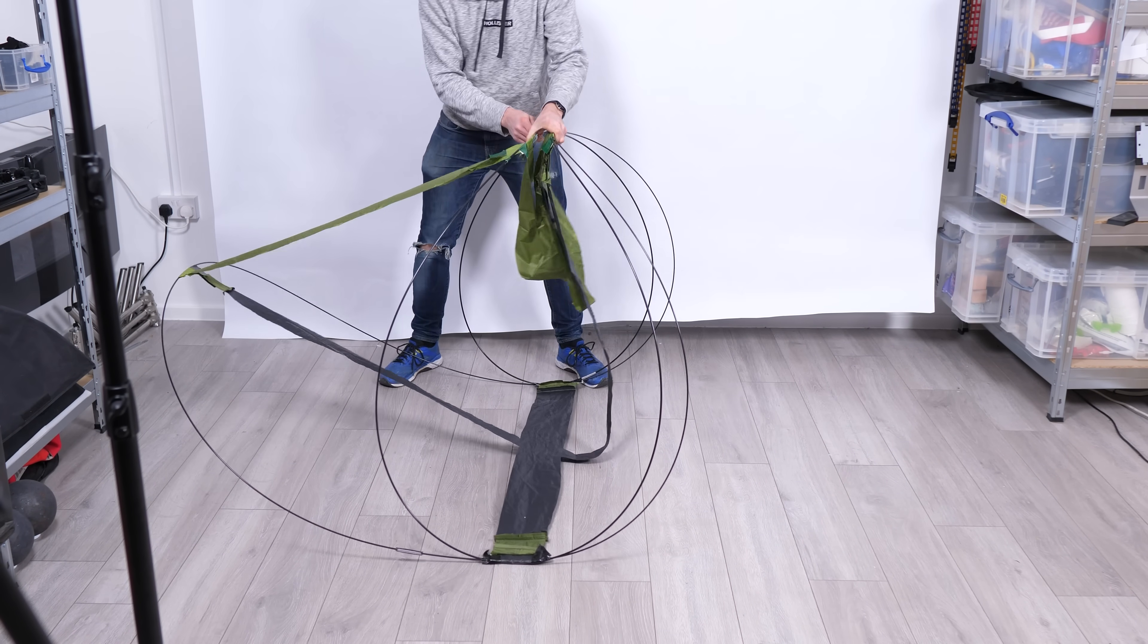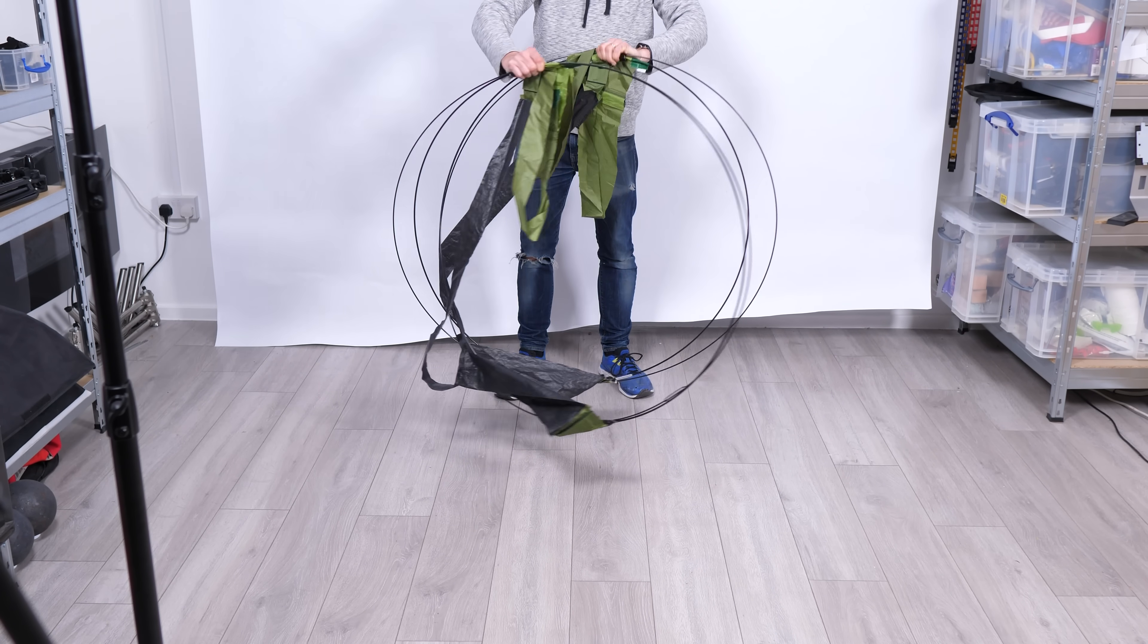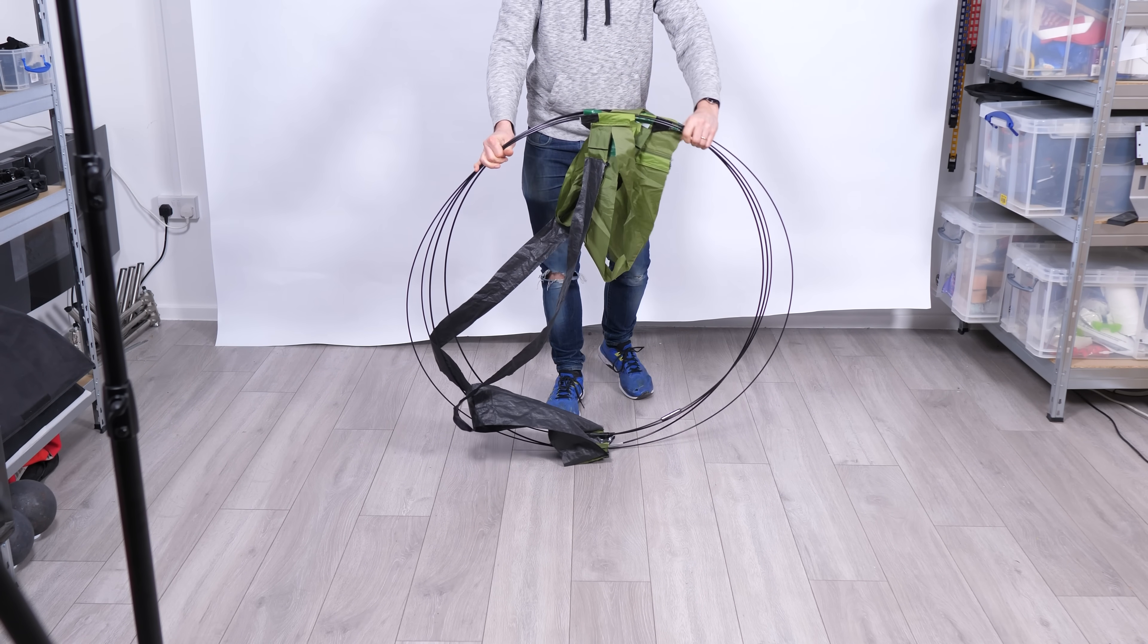By the way, tent poles aren't made of nitinol. They're typically made of either carbon fiber or aluminum. That's fine, but it's still too big for the bag.